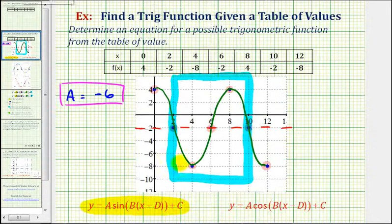Next, to determine the value of B, we need to recognize that from x equals two to x equals ten, the graph completes one cycle and then starts to repeat. Therefore, the period is equal to eight, which means two pi divided by B must equal eight.